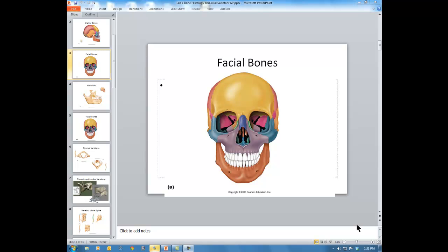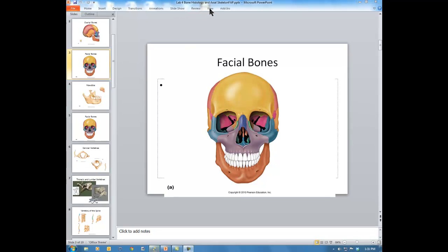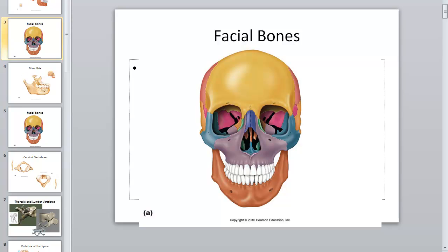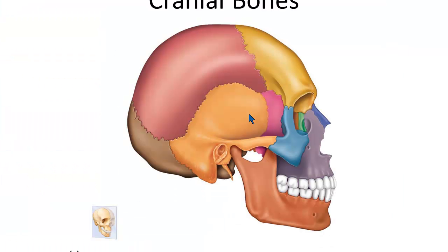Welcome to our fourth week of class. We're looking at the skeletal system this week, focusing on the lab portion right now. We're going to be looking at bones of the skull, and then proceeding through the rest of the skeleton. We're on page 20 in your lab book, looking at objective number one, the axial skeleton. The axial skeleton refers to the mainframe of the skeleton — the skull, the spine, and the ribcage.